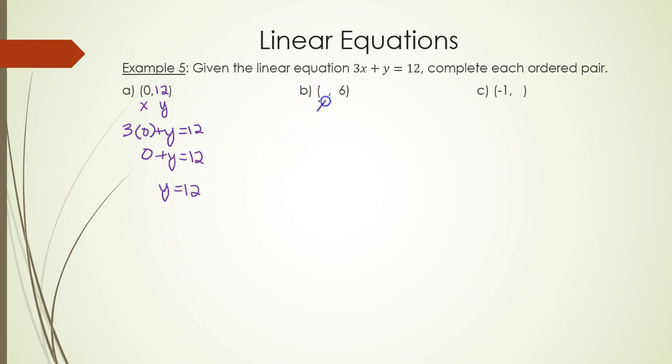Part B. x is unknown, y is 6. So we have 3x + 6 = 12. Solve the equation here. 3x = 6. Divide both sides by 3. x = 2. So (2, 6) is the ordered pair.